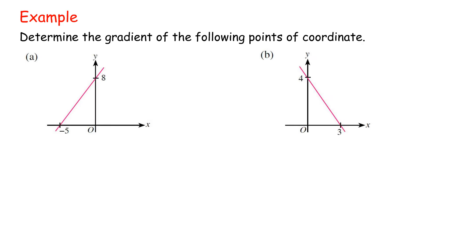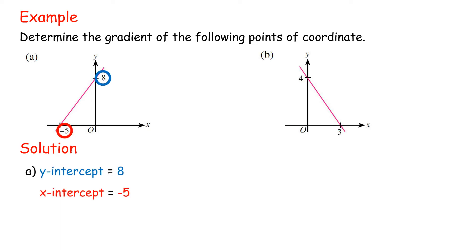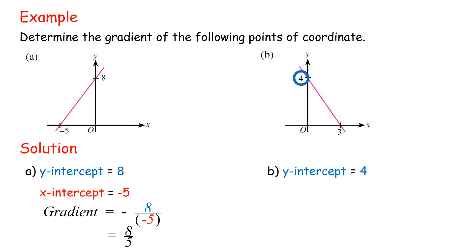Example: Determine the gradient of the following points of coordinate. Solution A: y-intercept equals 8, x-intercept equals negative 5, gradient equals negative 8 over negative 5, equals 8 over 5. B: y-intercept equals 4, x-intercept equals 3, gradient equals negative 4 over 3.